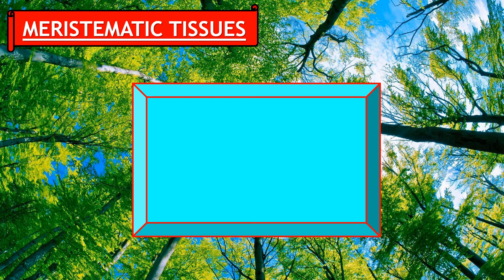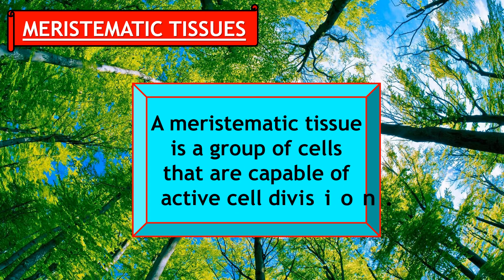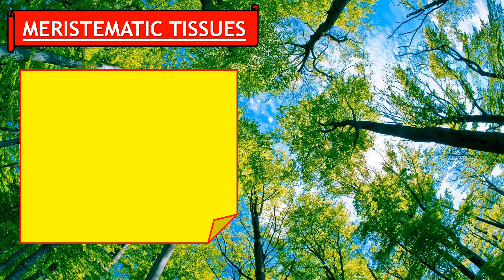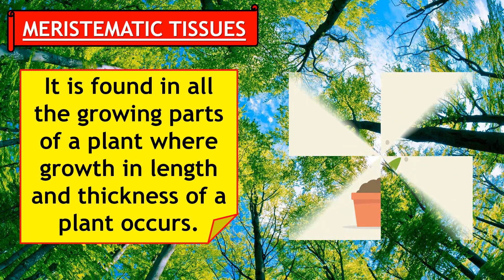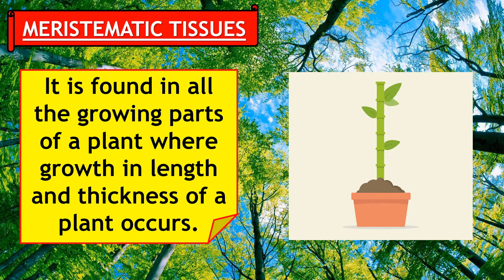A meristematic tissue is a group of cells that are capable of active cell division. It is found in all the growing parts of a plant where growth in length and thickness of a plant occurs.